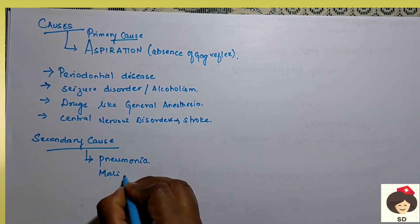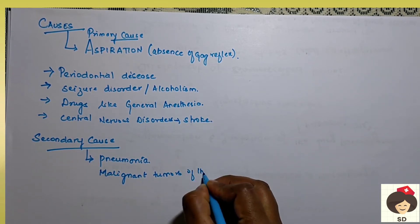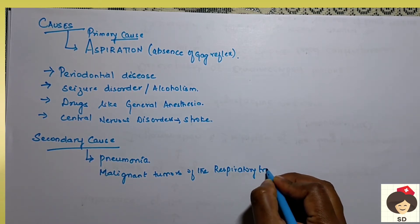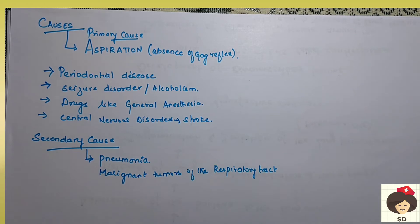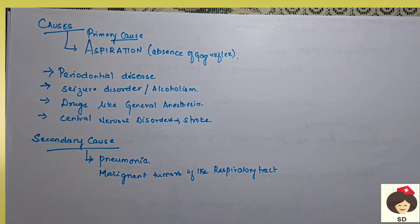Another secondary cause is any malignant tumors of the respiratory tract. In the bronchus or any area of the lungs, if there are malignant tumors — abnormal tissue growing in the lungs — as the tumors grow to larger sizes, mucus secreted in the lung cannot be cleared outside. When mucus is not cleared, it stays inside the lungs and bacteria start colonizing there, and thereby the person can go for lung abscess.